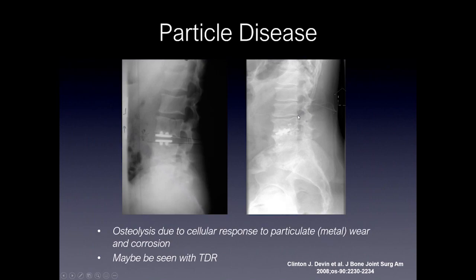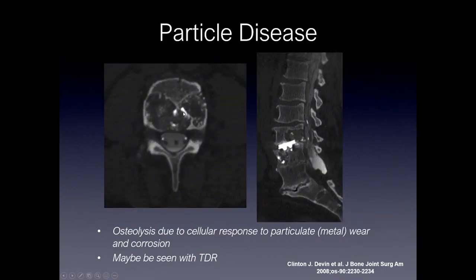Particle disease is a very rare event reported in the literature. It's an osteolysis due to cellular response to particles from wear and corrosion, and it can be seen with total disc replacement. In this example, you can see a total disc replacement with significant collapse and hyperdense material within the vertebral body. On CT, you can actually see migration of these little metallic particles within the vertebral body, which incites an inflammatory response and causes osteolysis, with metal shavings migrating into various areas around the construct.